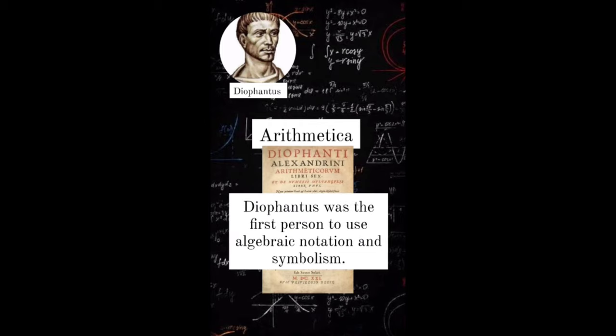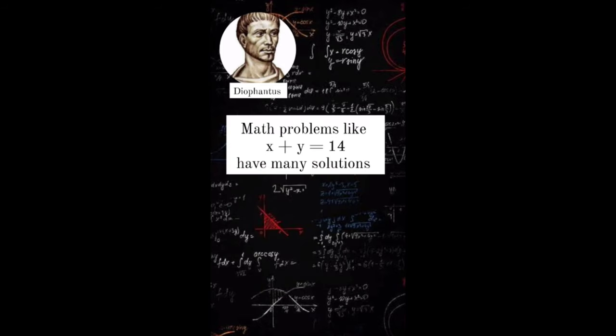Diophantus was the first person to use algebraic notation and symbolism. He introduced the idea that math problems like x plus y equals 14 have many solutions.